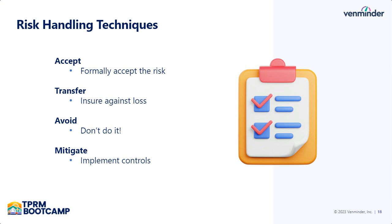I mentioned something called a risk handling technique — it's just an elegant way of saying how we handle and manage risk. There are basically four ways any organization can handle risk. The first one is to accept the risk, which means we know what it is, we're okay with it, we're going to accept the risk. The next one is to transfer — this is only about insuring against loss by transferring financial liability to another party like an insurer or back to the vendor. We're always responsible for all of the risks associated with the engagement. We can avoid the risk altogether — just don't engage. But the most popular and most common way to handle risk is to mitigate it, or implement controls.